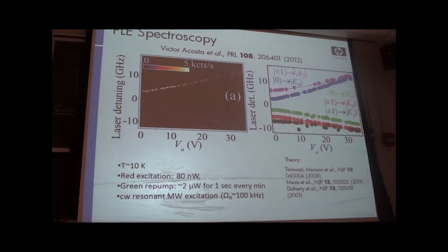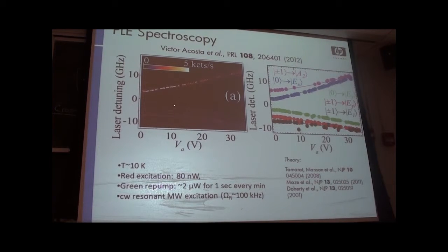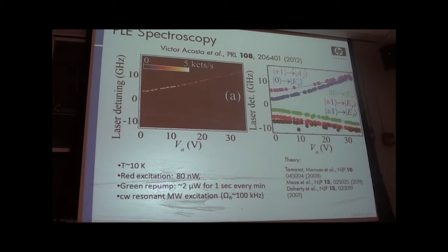People usually try to understand the NV center structure through photoluminescence excitation spectroscopy, sweeping a laser frequency across the zero-phonon transition frequencies while collecting fluorescence into the phonon sideband. You can get data that now agrees pretty well with theoretical models. To see all these transitions, you have to prevent optical pumping, usually done by applying weak microwave excitation to keep the ground states equally populated.